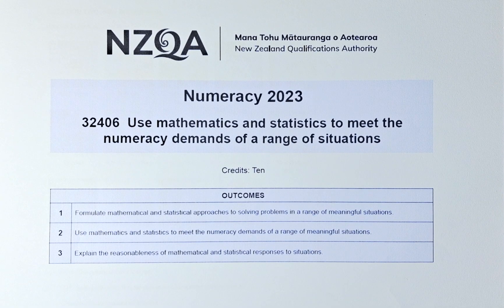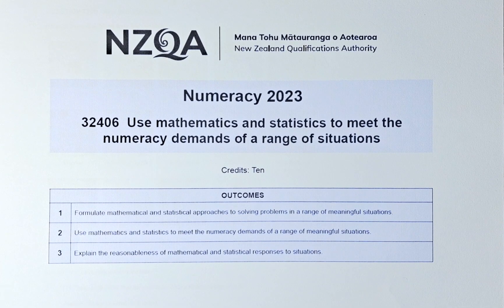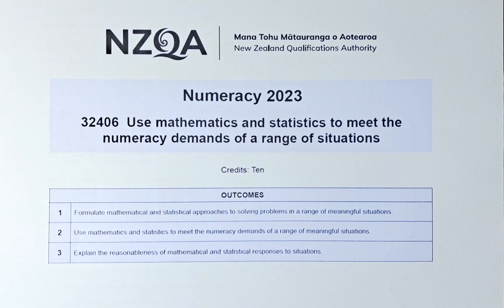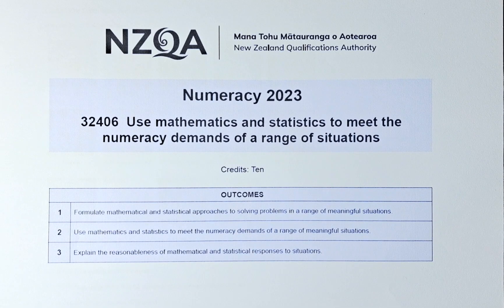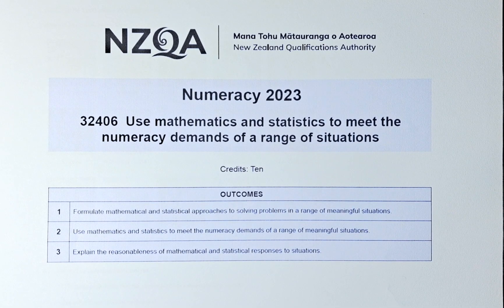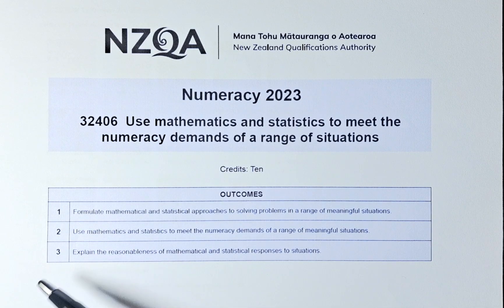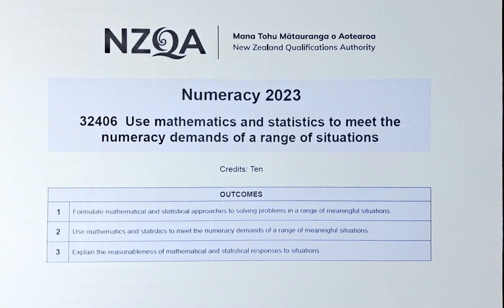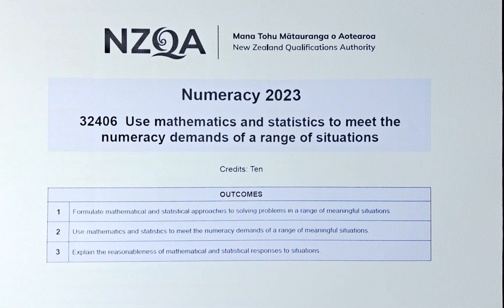It means that you either get an achieve or not an achieve. If you get an achieve, you get 10 credits. If you don't, then you don't get the 10 credits. So to get the 10 credits, there are three outcomes: 1, 2, and 3. In this exam, there will be a combination of outcome 1, 2, and 3 questions. So you must get a certain number of outcome 1, 2, and 3 for you to be able to get that 10 credits.